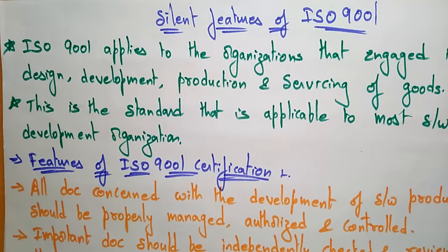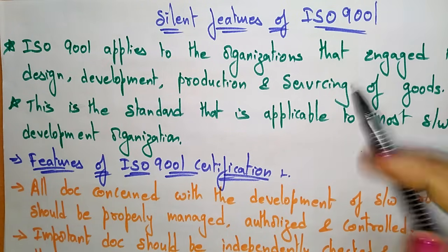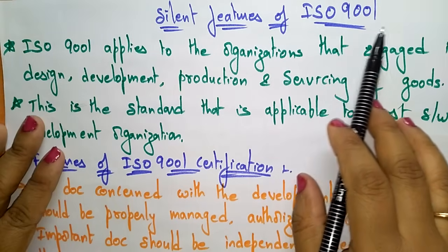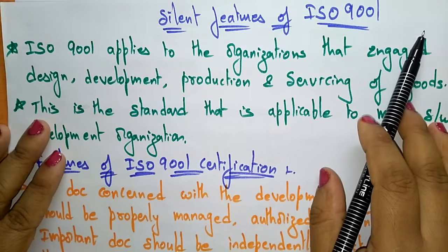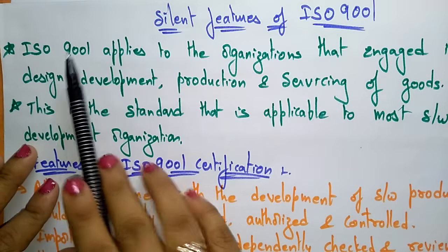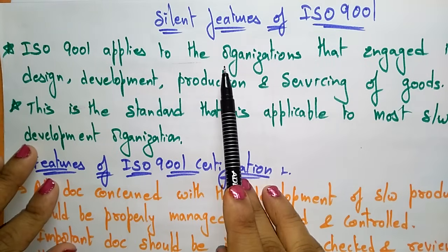Hi students, now let us see the overview of the ISO 9001 standard. In the previous video I explained about the SEI Software Engineering Institution CMM Capability Maturity Level, which is one of the standards given to organizations. Now let us see another standard, that is ISO 9001.